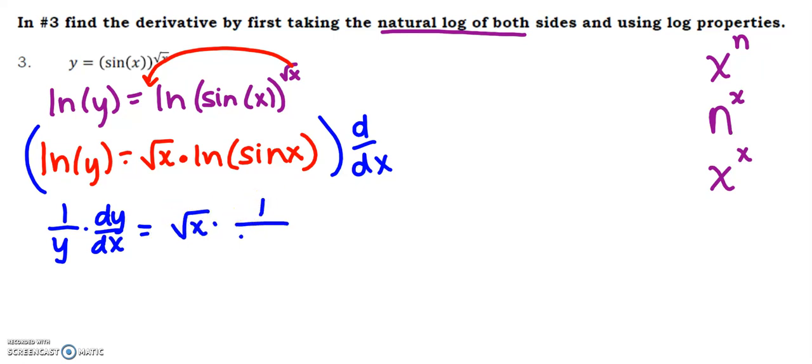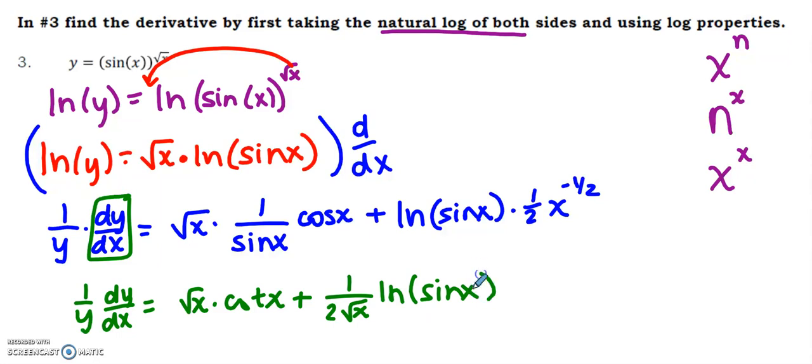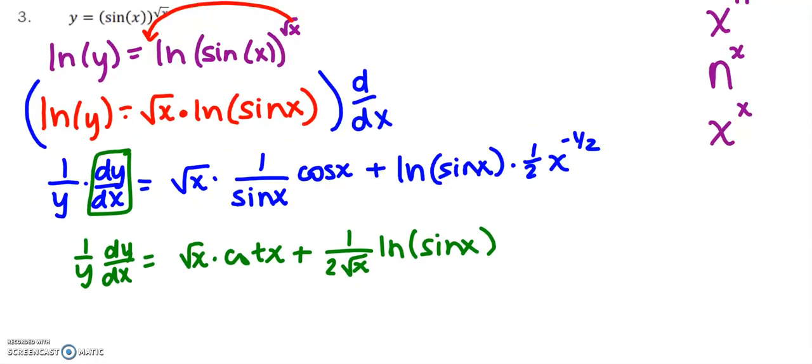Here I'm going to have first times the derivative of the second plus the second times the derivative of the first. I'm going to do a little cleanup work - I'm supposed to find the derivative so I'm trying to isolate this. I'm going to leave this as 1/y dy/dx. Cosine over sine is cotangent, and then this I'm just going to rearrange and write as 1/(2√x) natural log of sine x.